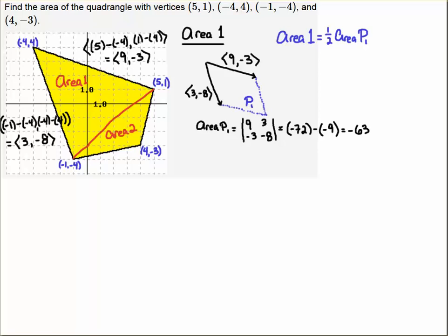Here's how I find the area of P1. I get that the determinant is minus 63—this is a signed area, so we want a real area, so I'm going to put absolute value bars around that. I see that the area of P1 is 63. So if the area of P1 is 63, then the area of 1 is one half that, which gives us 63 over 2. That gives us the area of this triangle here—it's half the area of the parallelogram.